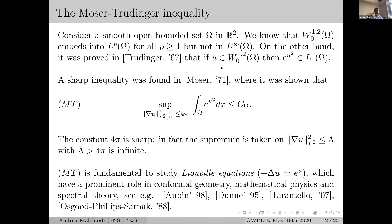There are many applications of the Moser-Trudinger inequality, especially in the study of Liouville equations. Liouville equations are elliptic equations of the type Δu = e^u, and they have a prominent role in conformal geometry, mathematical physics, and spectral theory. References include three books by Aubin, Djadli, and Tarantello, and two papers by Osgood, Phillips, and Sarnak for applications in spectral theory.